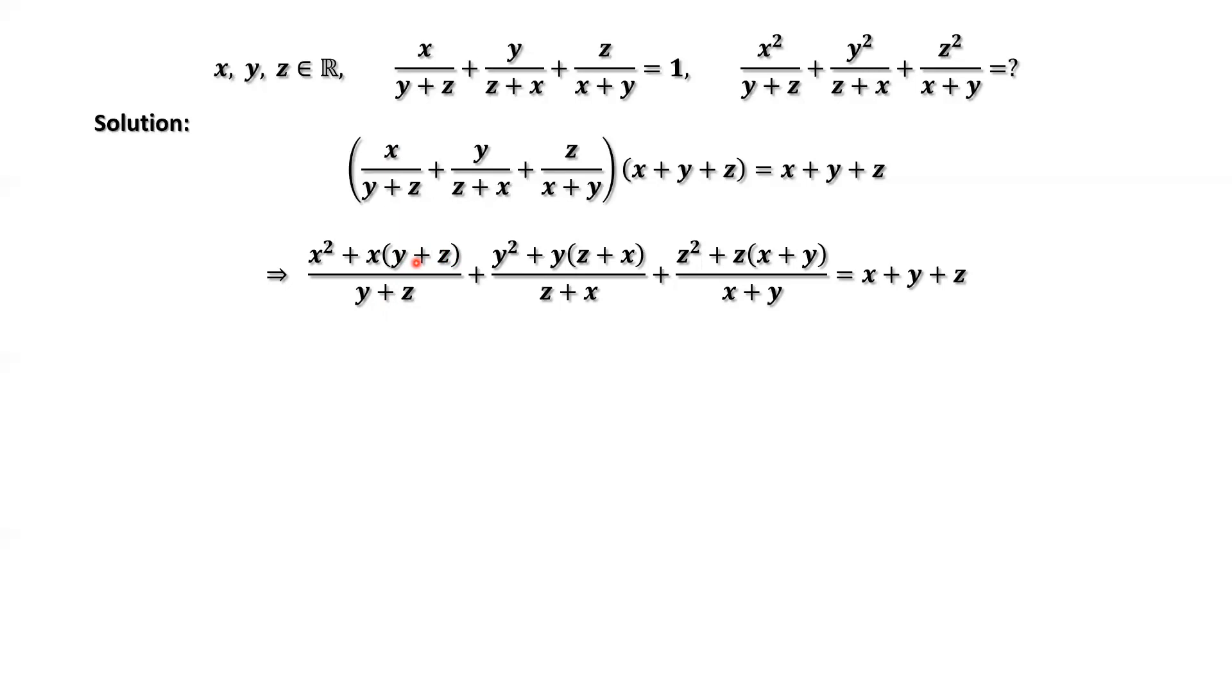Similarly, we do the same thing for the second term. y times y is y squared. Then y times the remaining part, x plus z, x plus z. Same thing for the third term. z times z, that's z squared. z times the remaining part, that's x plus y.